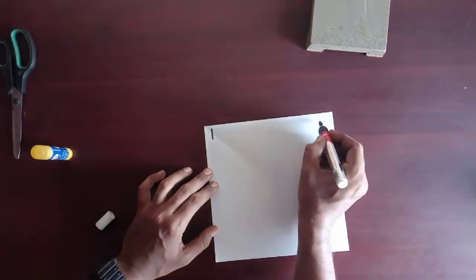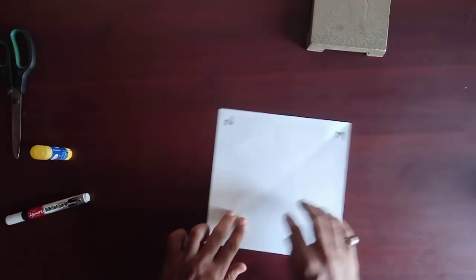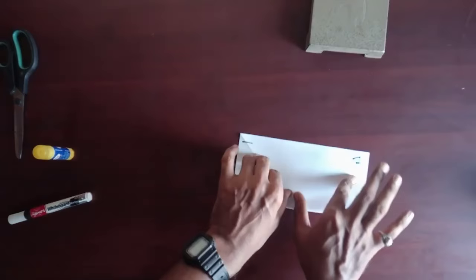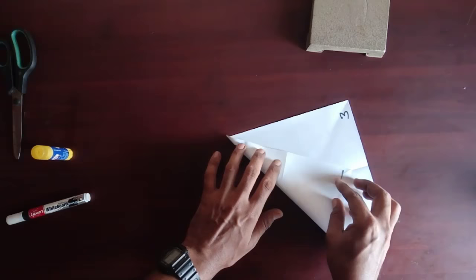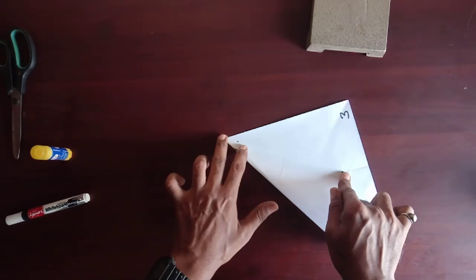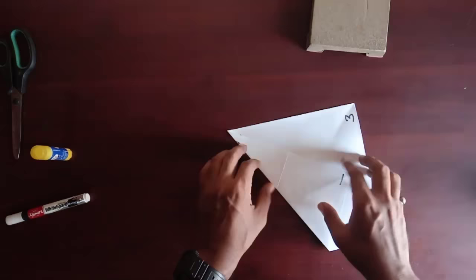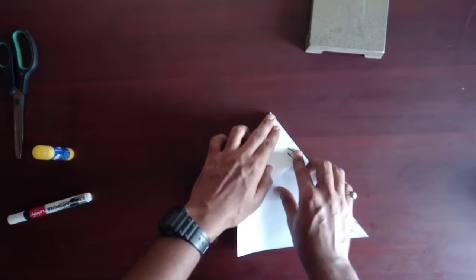Now mark 1, 2, 3, 4 at the corners. Fold the sheet in two halves by bringing corner 1 over corner 2 and make the midline. Make a fold up to corner 2 like this. Now fold corner 4 over this fold and you will get a 60 degree fold.